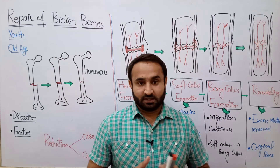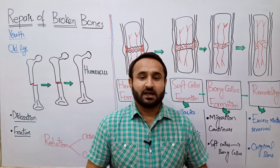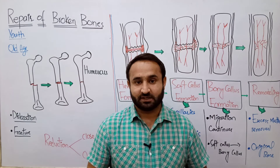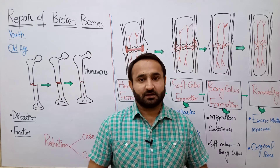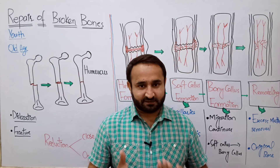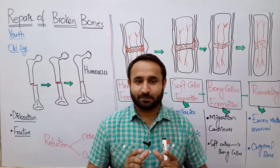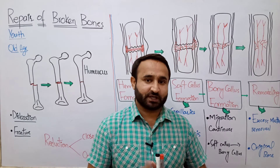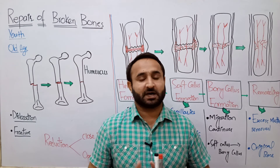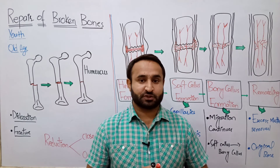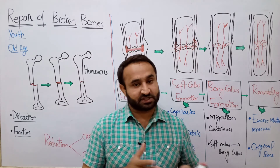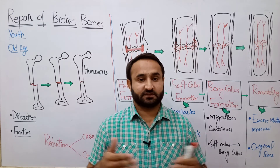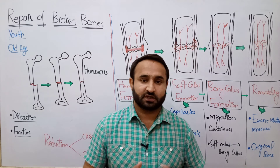First of all, we will see how bones break. Bones are quite strong, tough, rigid, and hard, but still they sometimes break. In youth age, the reasons for broken bones are trauma — meaning physical injury. Sports injuries while playing or running, automobile accidents where young people drive fast on bikes and fall, or falls from some height like falling from a roof while flying a kite.